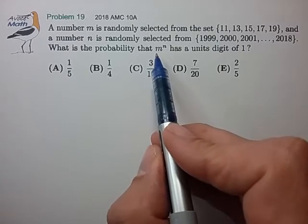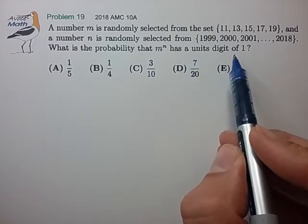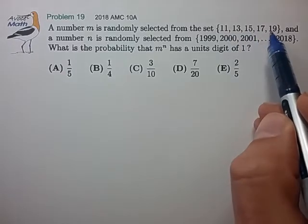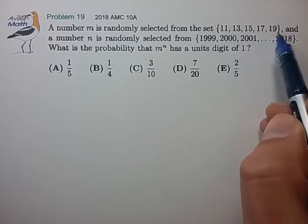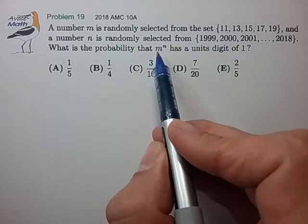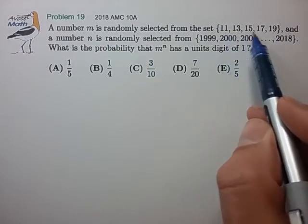Now since we're only dealing with the units digit, we can ignore the tens digit in the base of these exponents. So let's write a table of the units digit of the basis for our exponents. So the units digits go from 1 through 9.